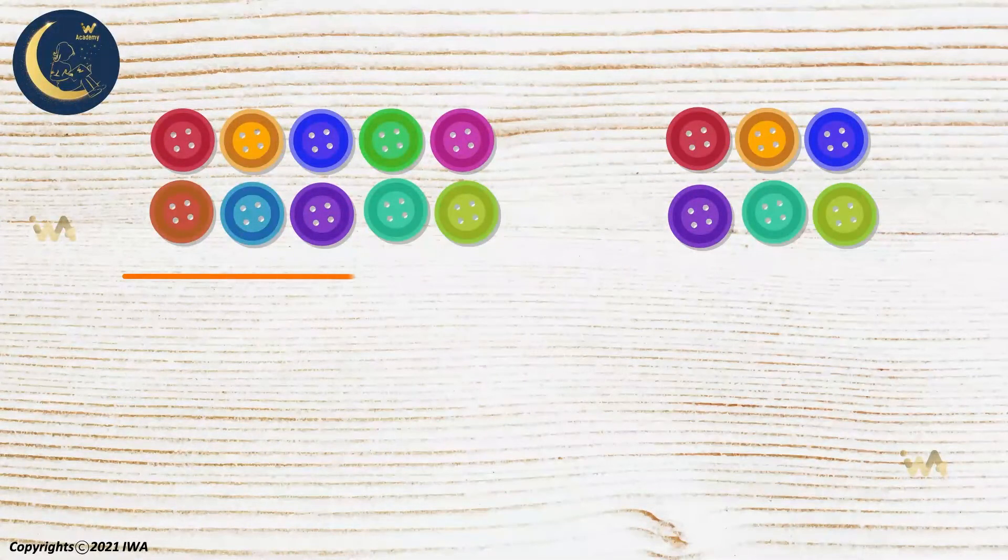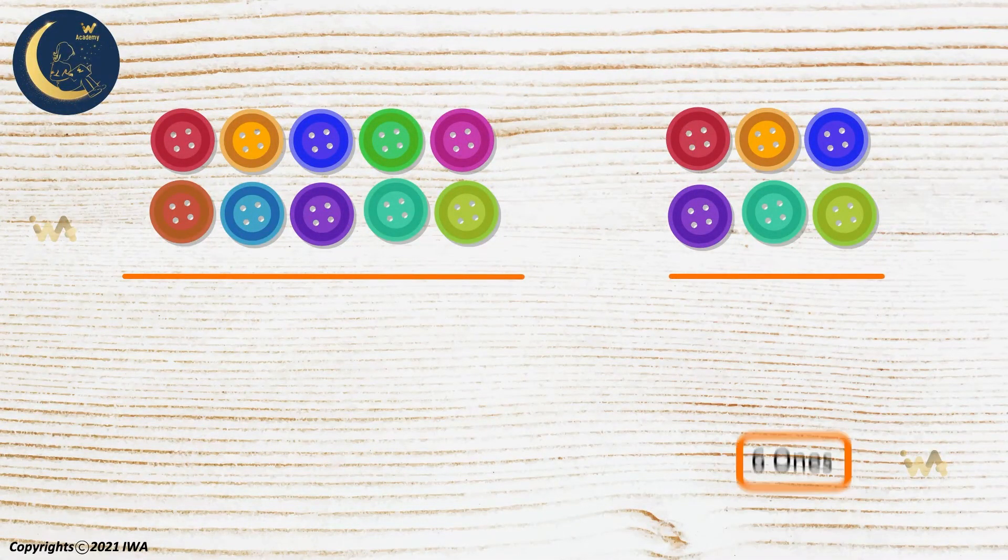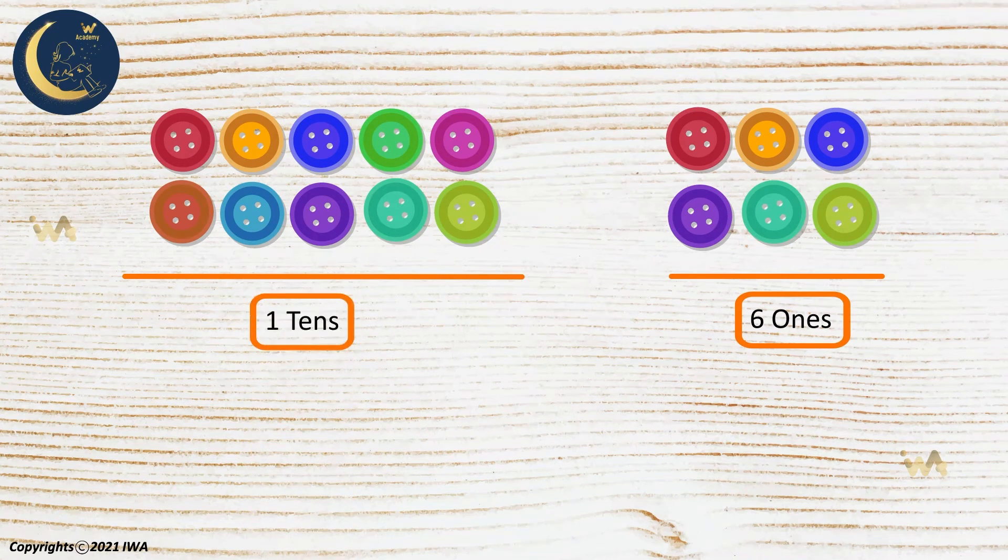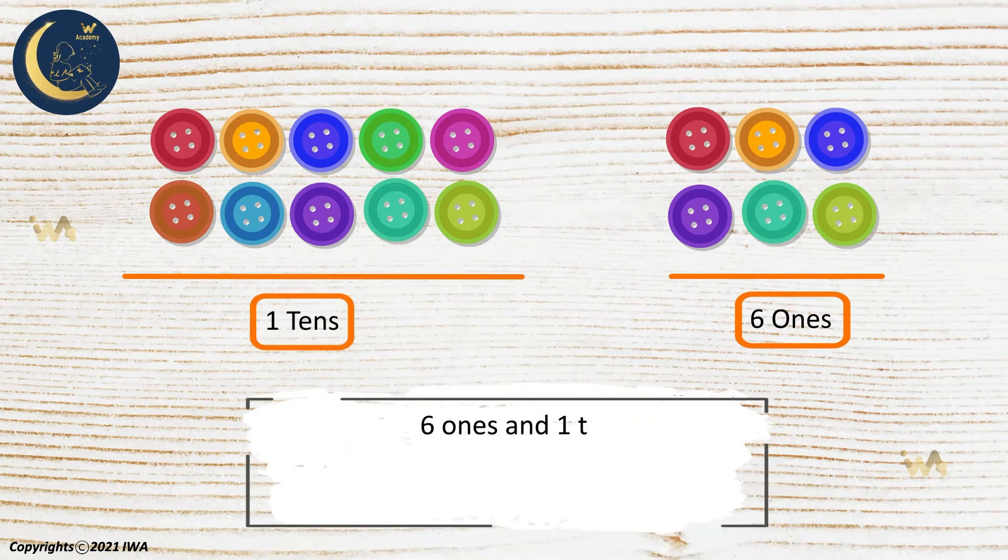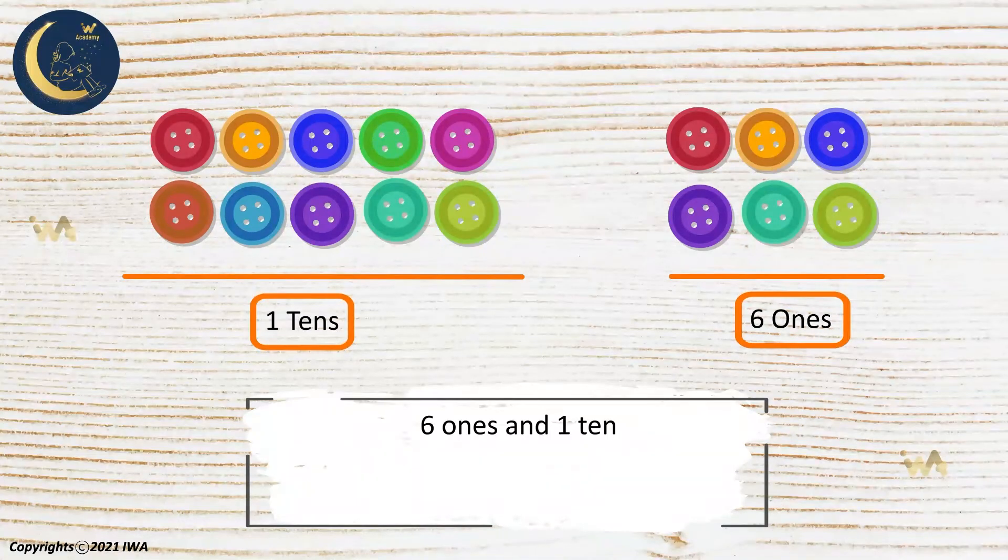Now we will see the place value of the number of buttons. They are made up of six ones and one ten. The place value of number six is six, and the place value of number one is ten. So six plus ten equals sixteen.